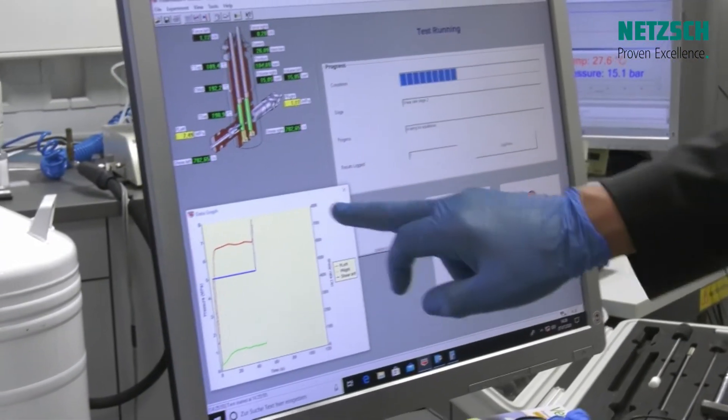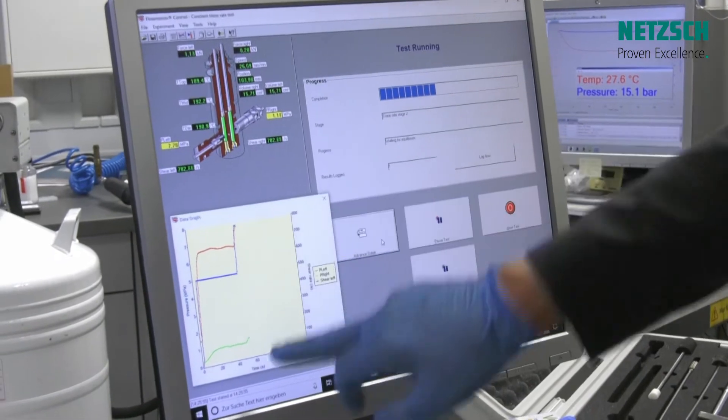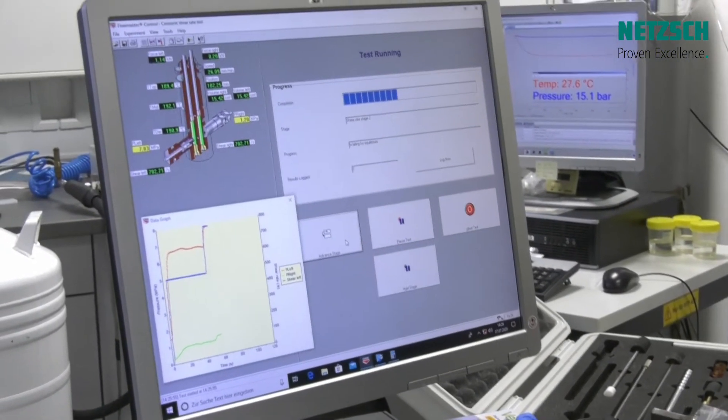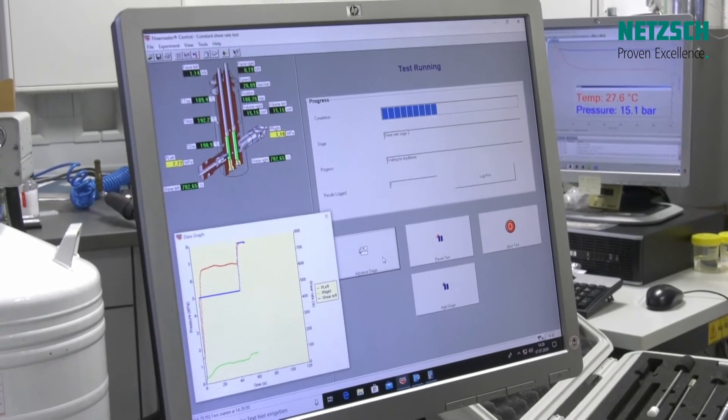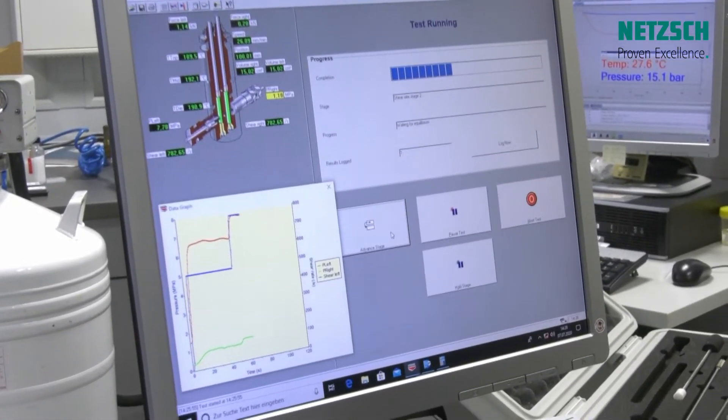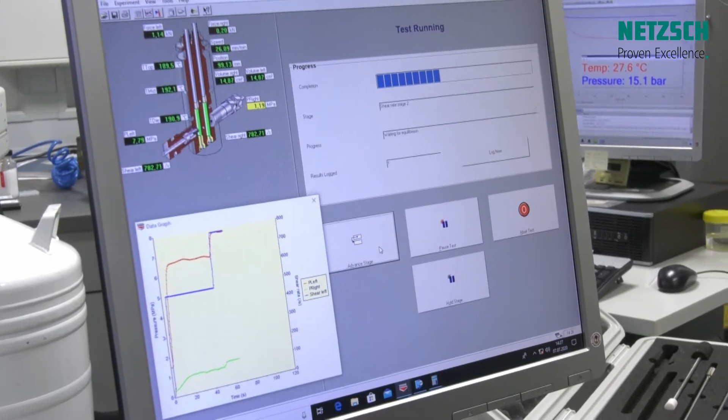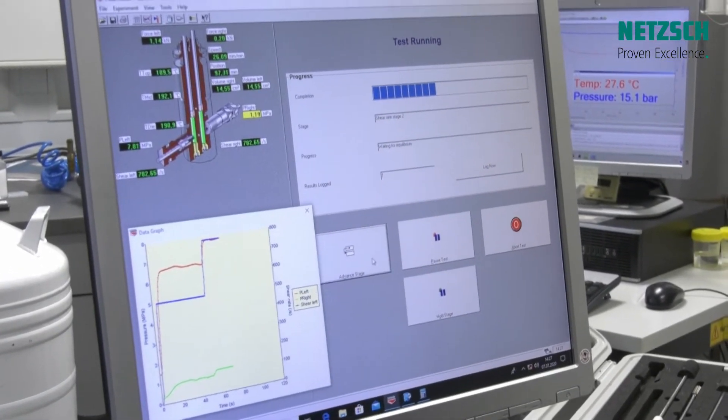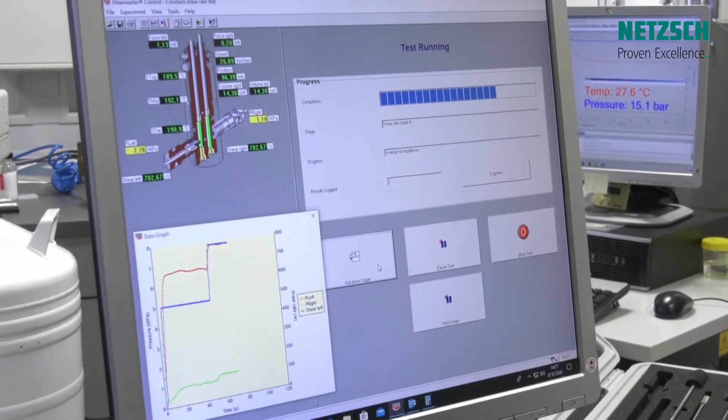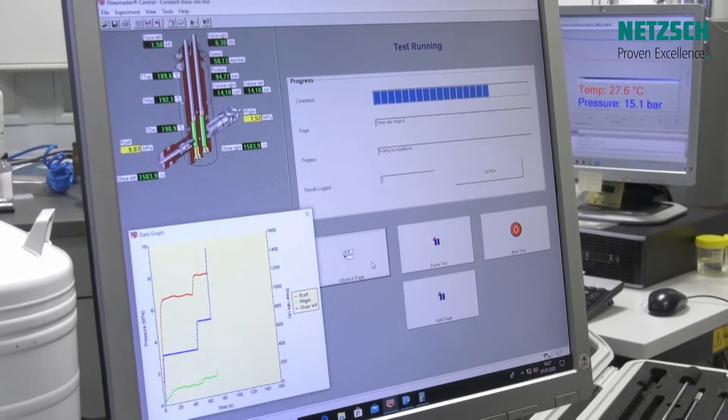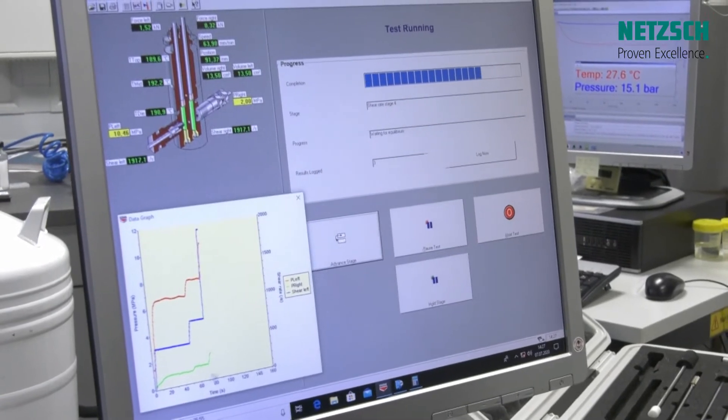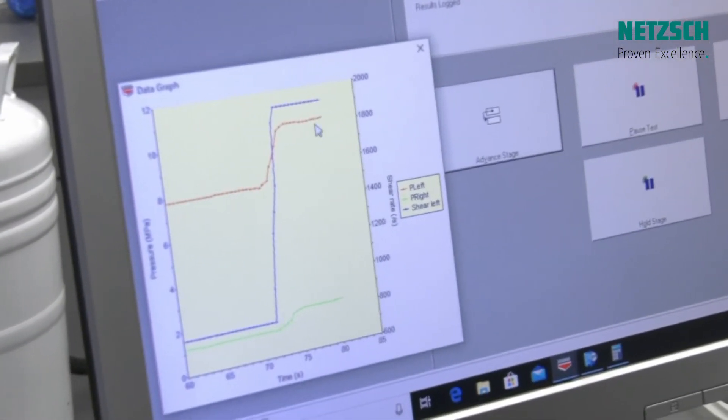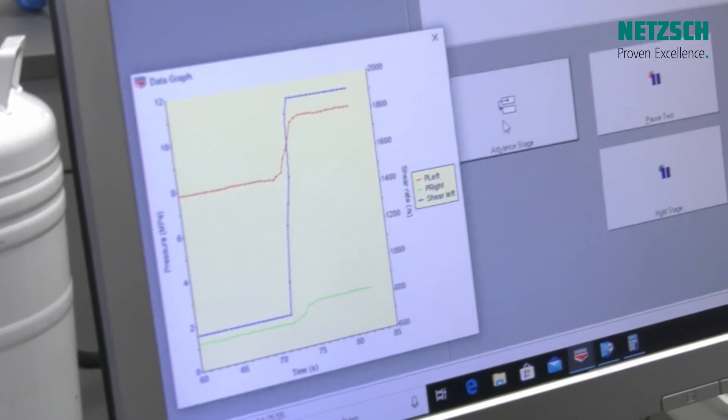And you see now that the speed is increasing. The pressure on both dies are increasing as well. So the larger the speed, the more force we need to push the material through. And the resistance against this flow is called the viscosity. So we go for the next stage. And you can zoom in to see that we are in equilibrium for this speed stage.